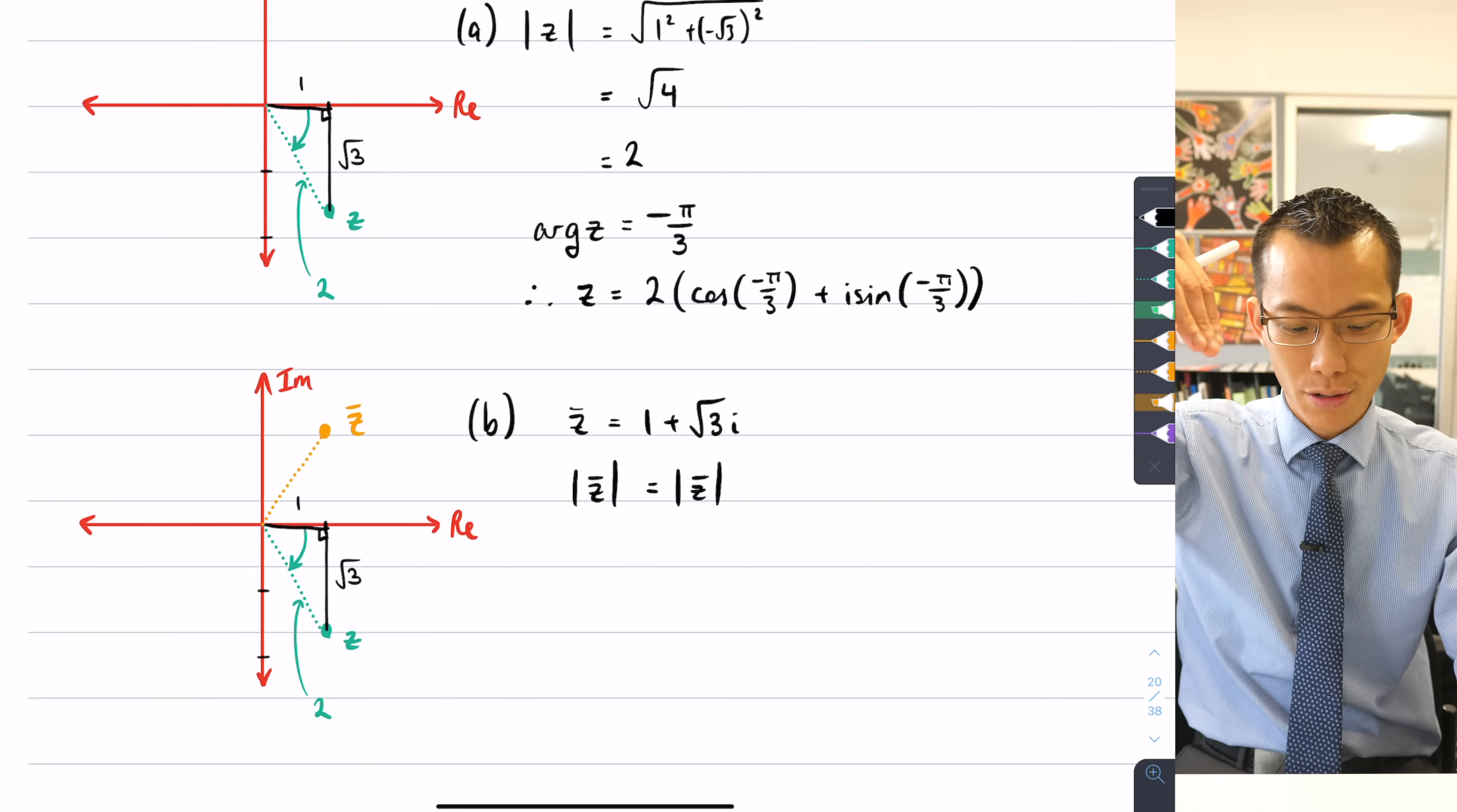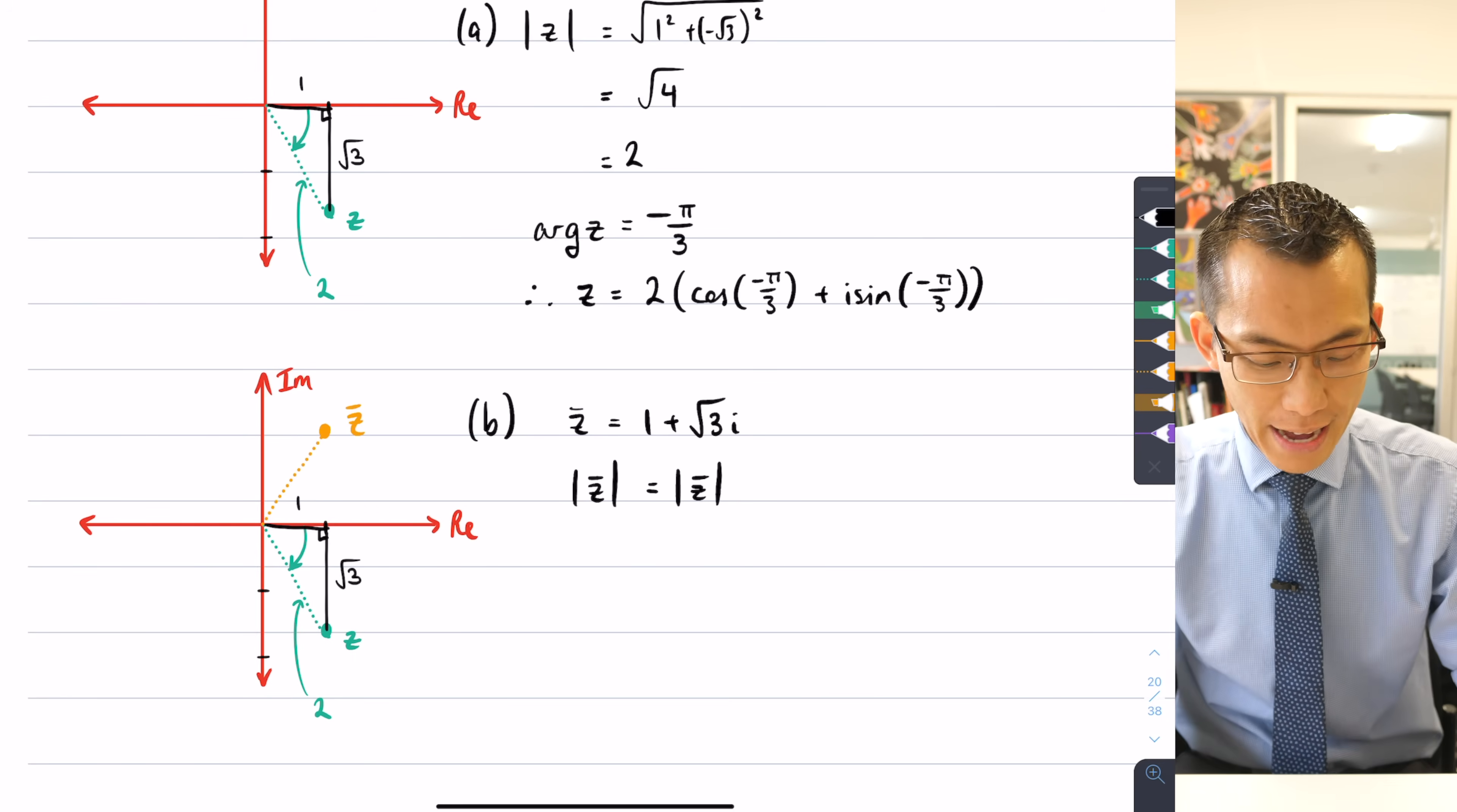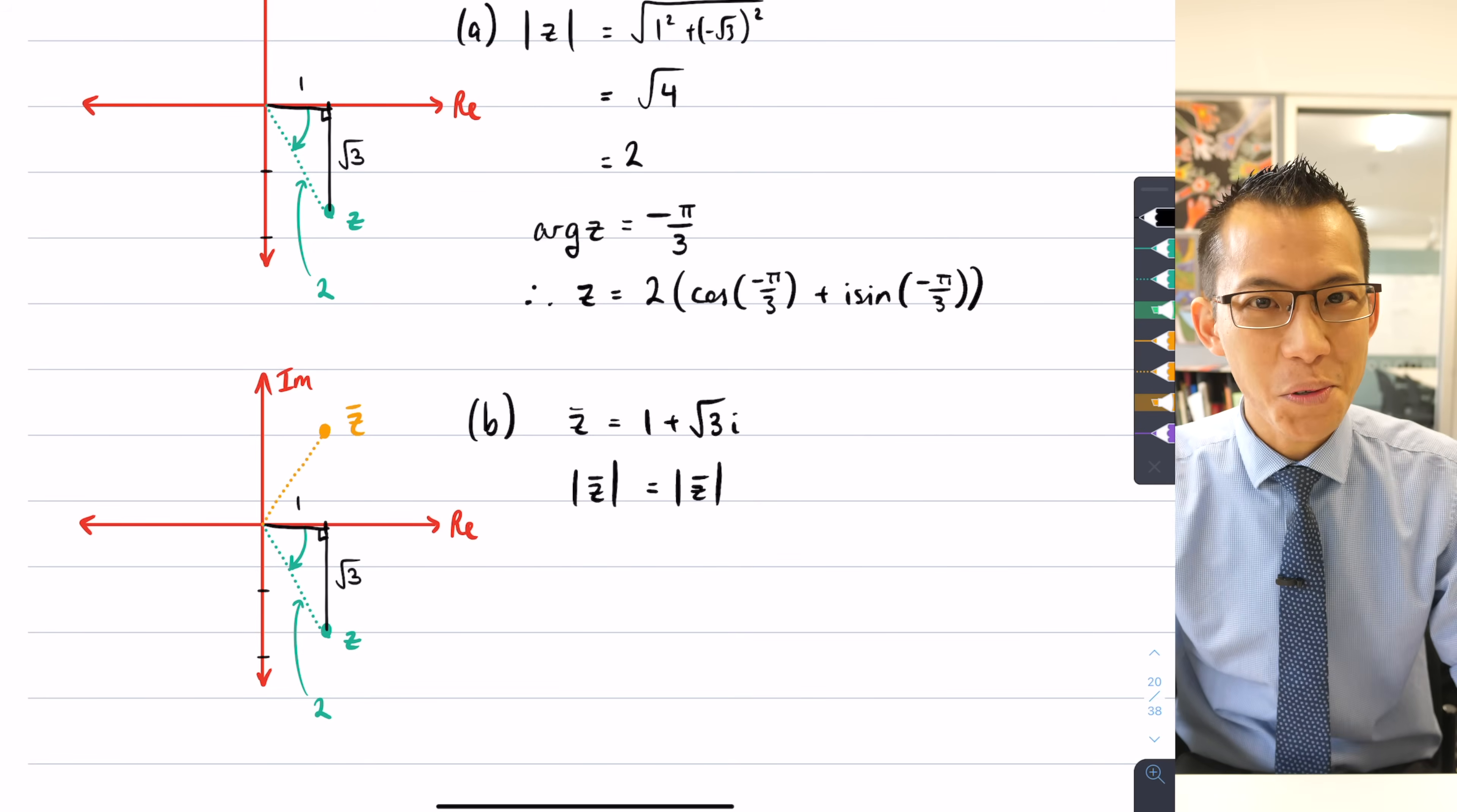And that's because that reflection upwards preserves the size of what's going on, right? So whereas I went down in that direction before, now I'm going up in this direction. So I can say those moduli, that's the plural, are the same.